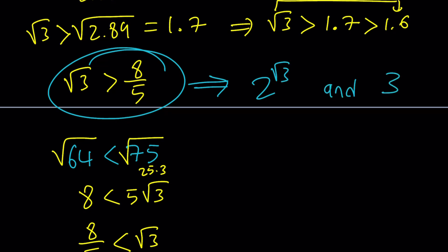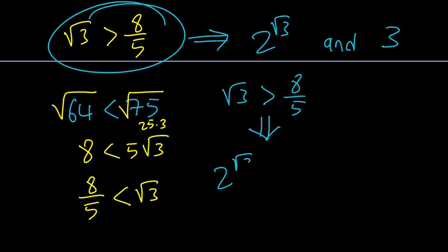Good. You probably guessed it. I'm going to use this in the exponent. So, since root 3 is greater than 8 over 5, this basically implies that 2 to the power root 3 is greater than 2 to the power 8 over 5.